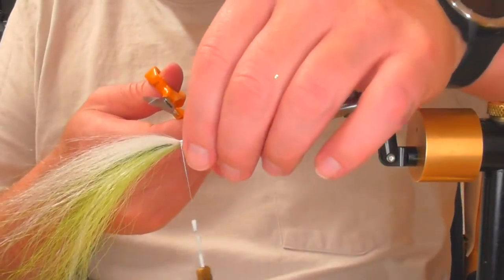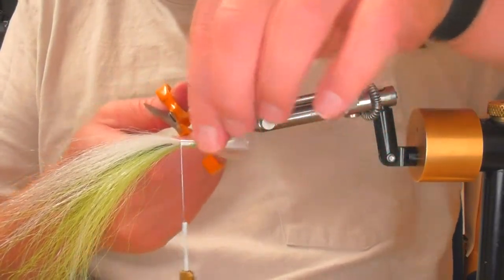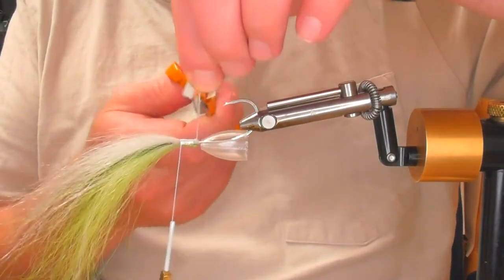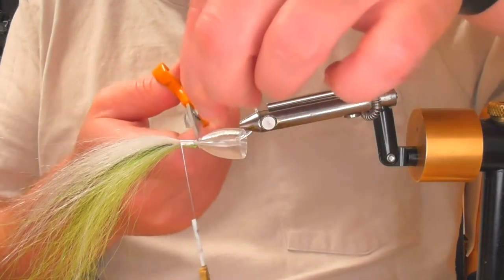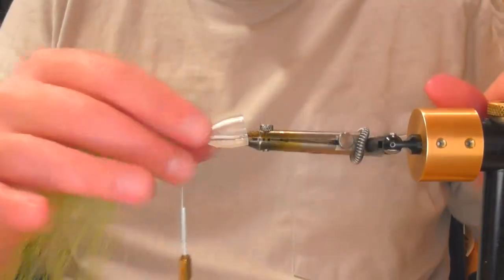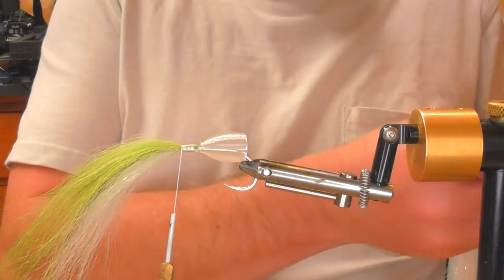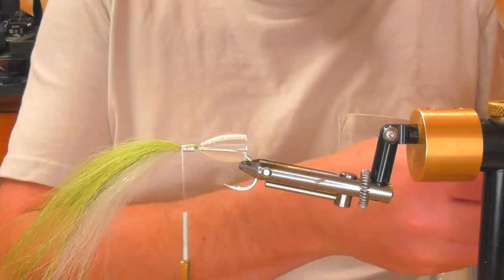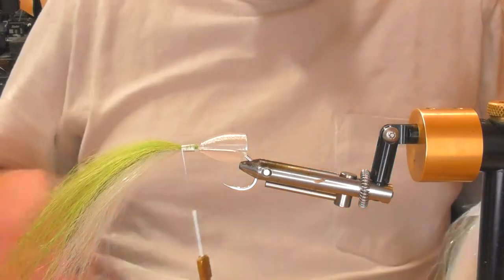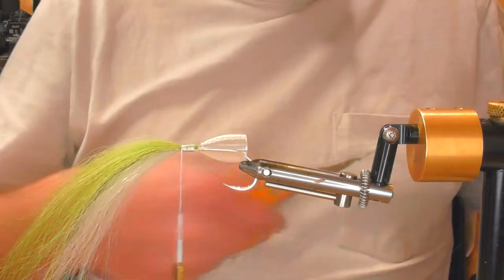So we're going to take the excess and just trim that off. Pop that out the way. Don't worry about making that super neat because it is going to be buried inside the fly and you'll probably never see it again unless you open up the fly to have a look at it.